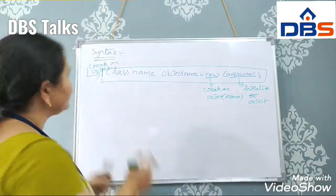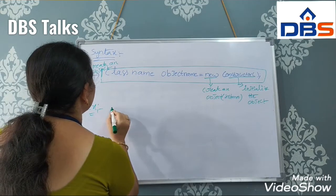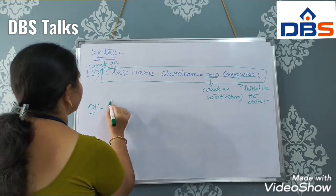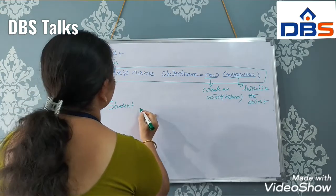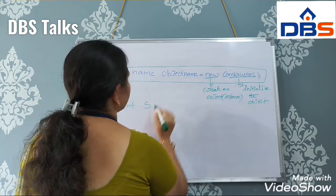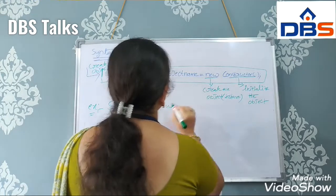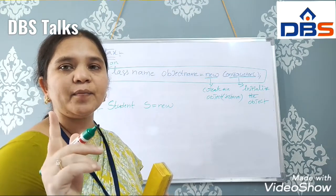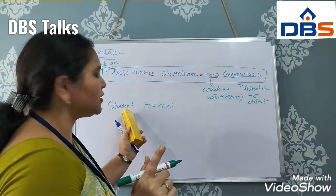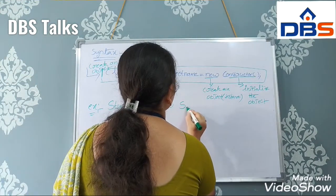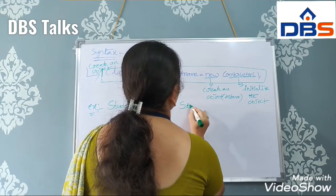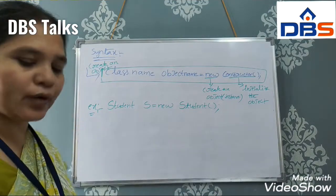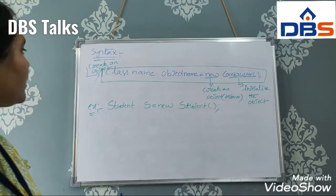For example, if we take class name as Student — S capital, because class names always start with a capital letter — the object name is S, equals new Student(). The constructor name must be Student because the constructor name must equal the class name. This is the example syntax for creating an object and initializing it using a constructor.